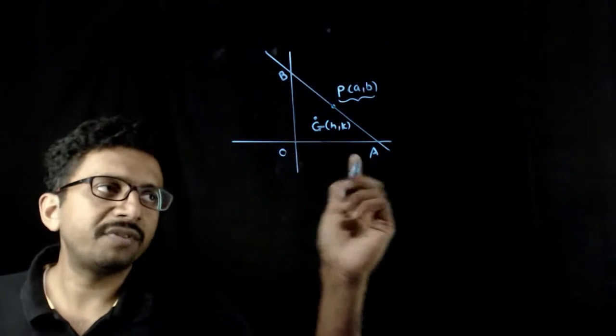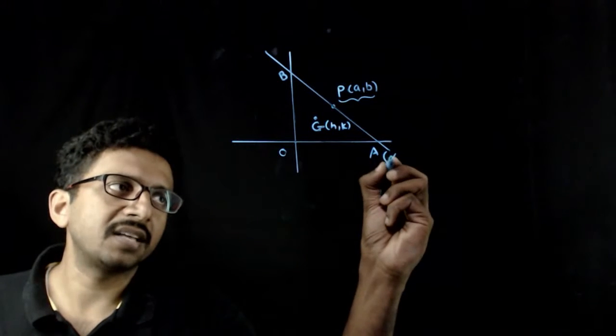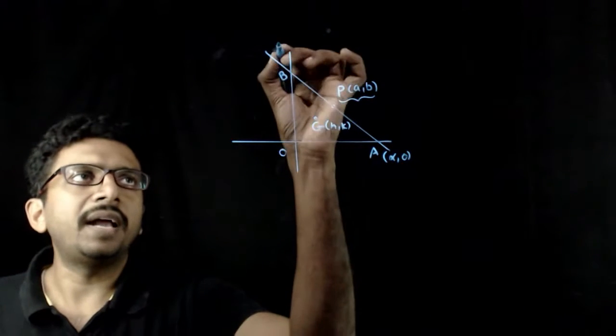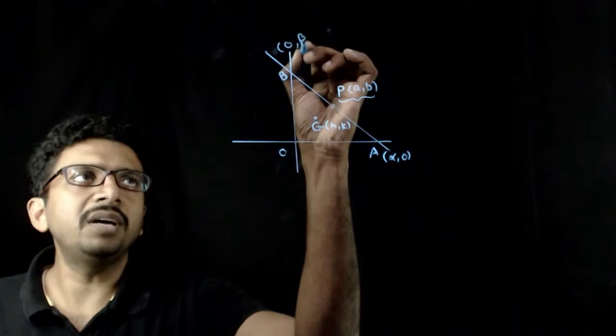In this configuration let us take the coordinates of A as alpha comma 0 and the coordinates of B are 0 comma beta.